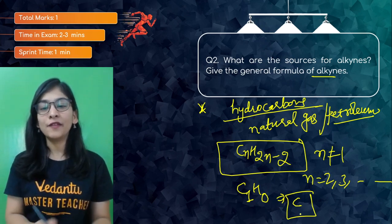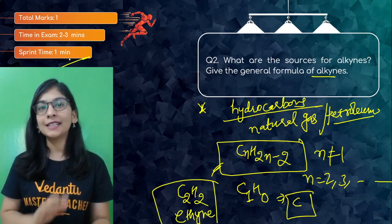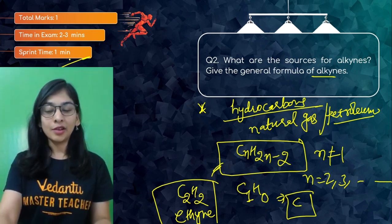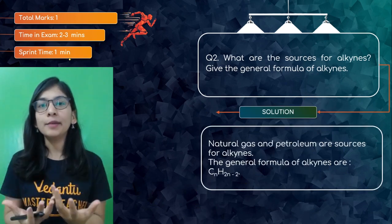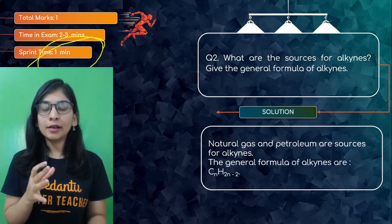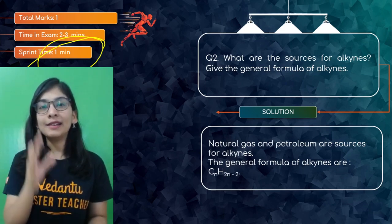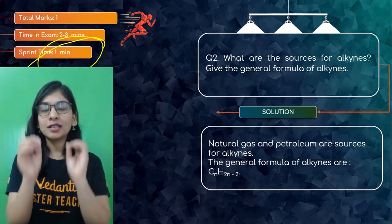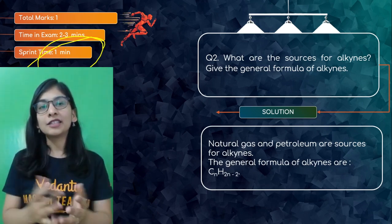The very first member of the alkyne family is when n=2, giving C2H2 — that is ethyne. Two carbons can form a triple bond. In one minute you can answer this if your concepts are clear. Time management is very necessary in exams — don't spend too much time on a single question. Do enough sample papers to understand how much time each question needs, and if you get stuck, move on.